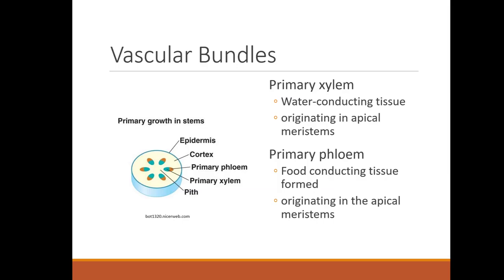Primary xylem is the water-conducting tissue. This originates in the apical meristems, both in the roots and in the shoots. Primary phloem is the food-conducting tissue, and it is also originating at the apical meristems.